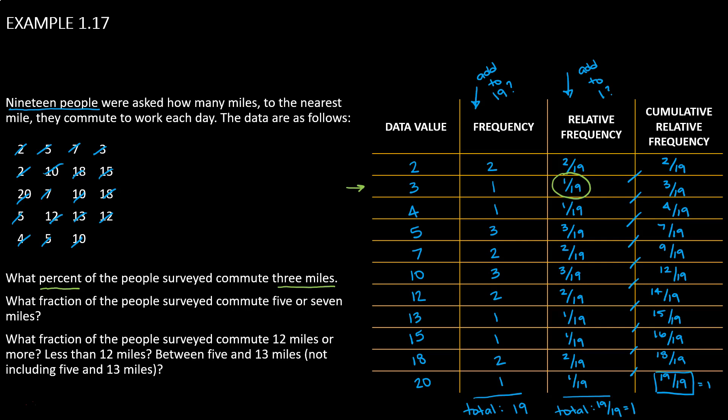So when I do 1 divided by 19, I get a decimal version. I'm going to multiply that by 100 to make it a percent, and that's about 5.3%. So 5.3% of people surveyed commute 3 miles.